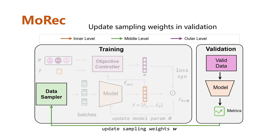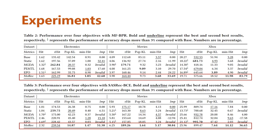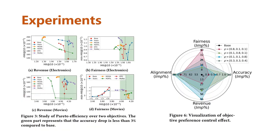The model's parameters are then updated with the final loss, and the above steps are repeated until the training epoch ends. Sampling weights are then updated with the validation data. Our method shows significant improvements across all objectives on all datasets, and it is model-agnostic, showing improvements for both MF and SASREC models. Our method also shows great Pareto efficiency in a two-objective scenario, and the solution obtained corresponds to the preset objective preference weight, showing great control effect.